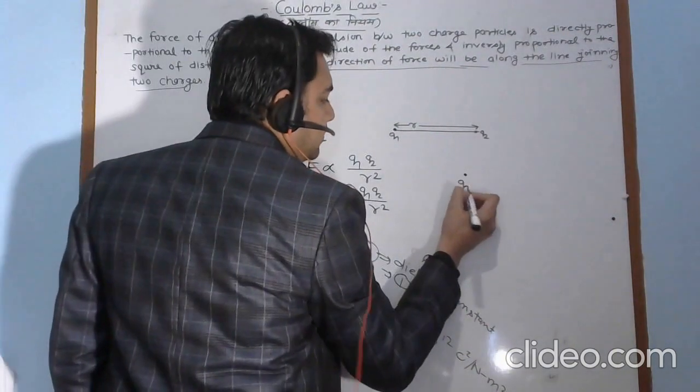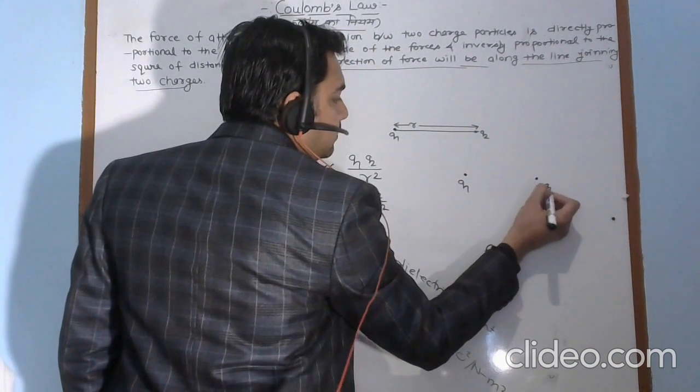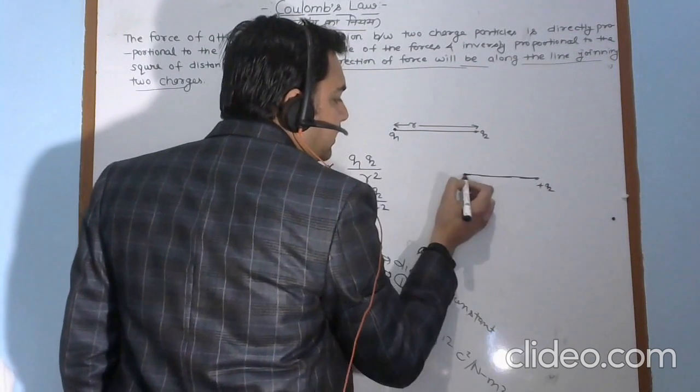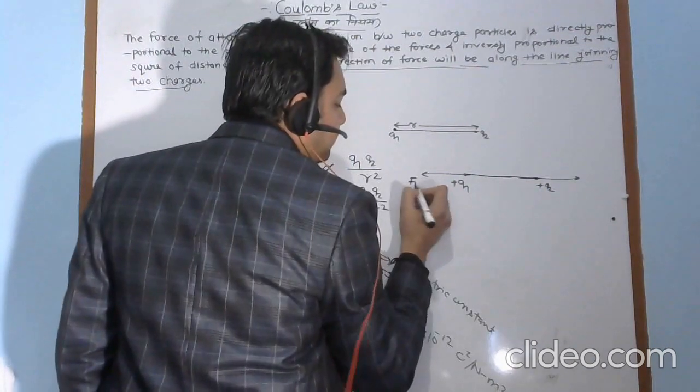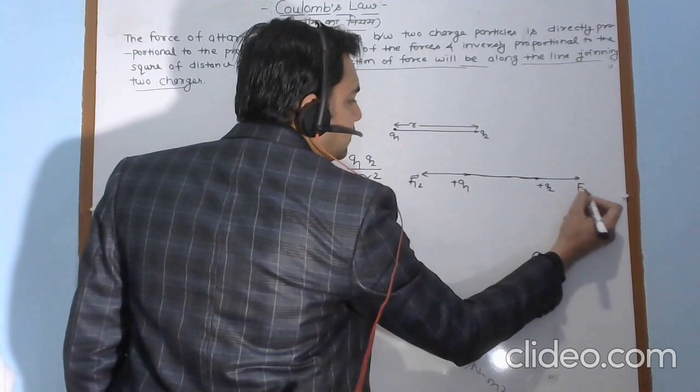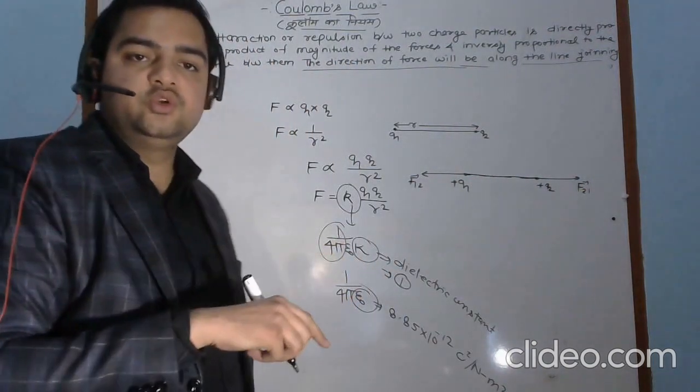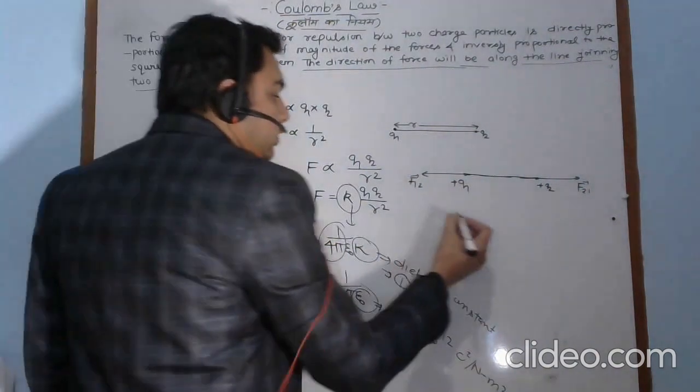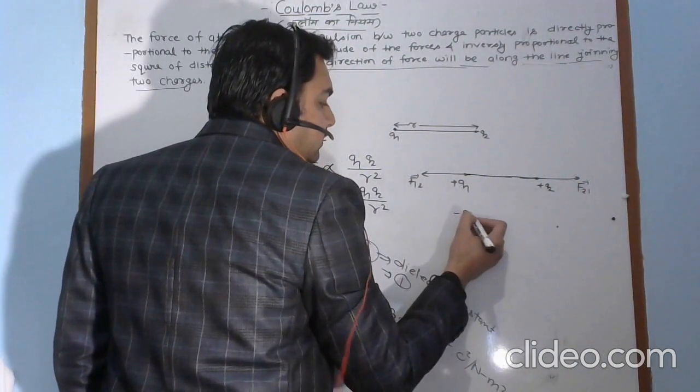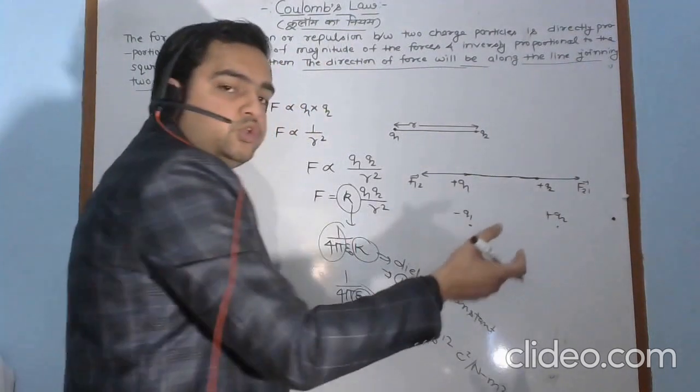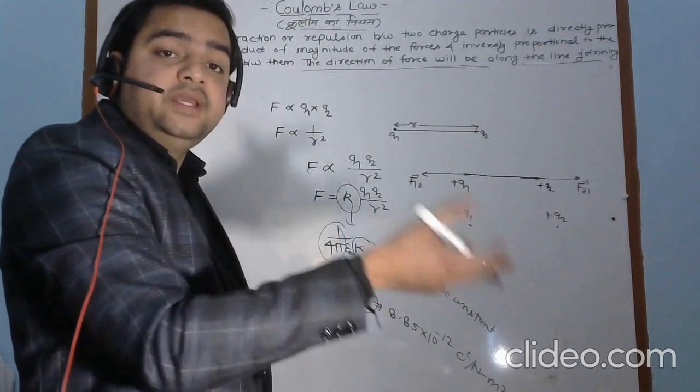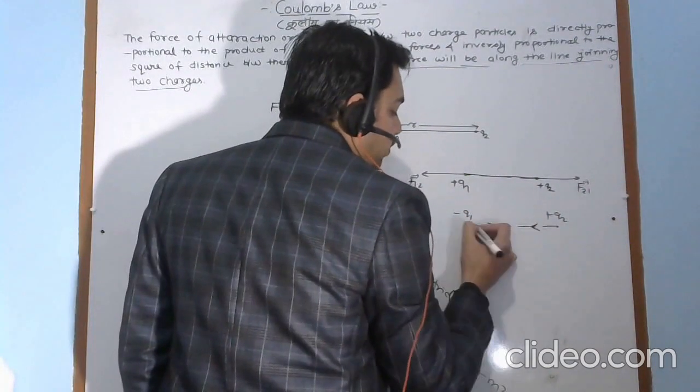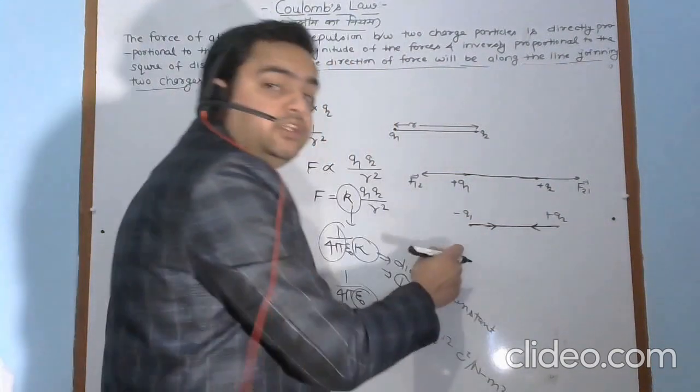Suppose q1 and q2 both are positively charged. Then the force acting between them will be along the line in outward direction. If q1 and q2 are of opposite sign, then the force will be attractive and it will act inwardly. But it will always act along the straight line joining these two charges.